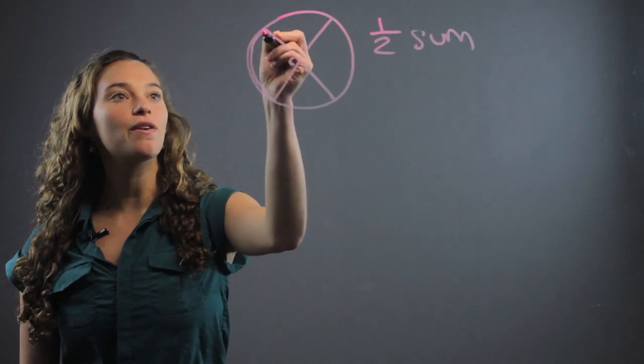Well, the measure is half of the sum of the intercepted arcs. So you have this arc and you add it to this arc and then you divide it by two to find this angle or this angle because these are vertical pairs so they're going to be the same angles, equal angles.